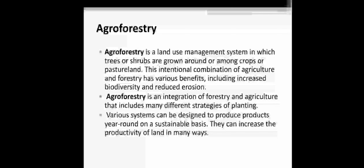It is an integration of forestry and agriculture which includes many different strategies of planting. Various systems can be designed because crop plants have specific types of trees and those trees help them to grow. The trees help with pollination of that crop plant, so they increase productivity of land in many ways.